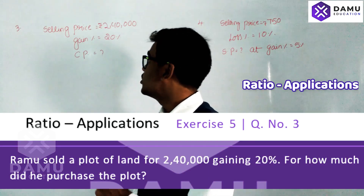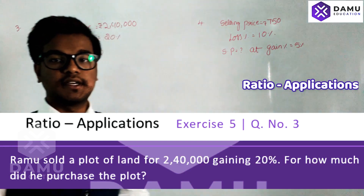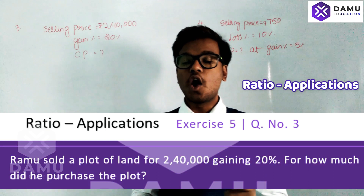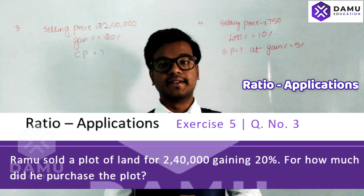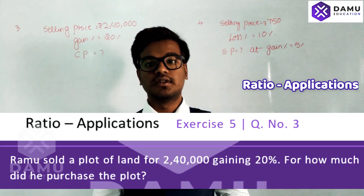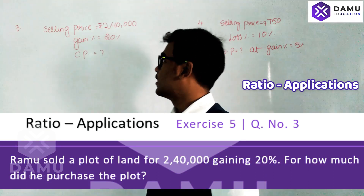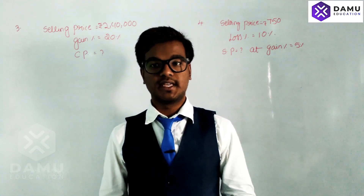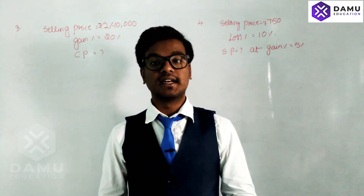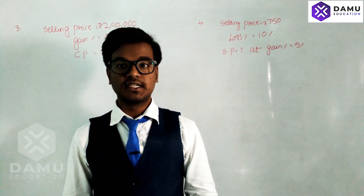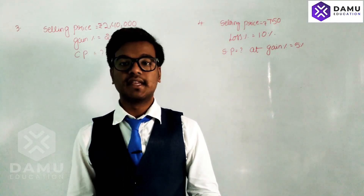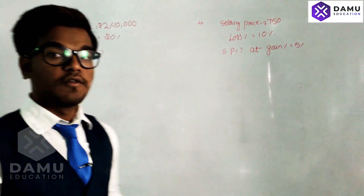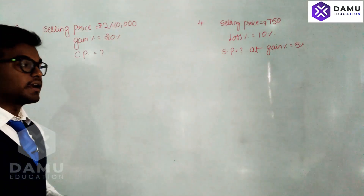He got a gain percentage of 20%. Then how much did the plot cost when he bought it? What is the cost price — how many rupees did he pay to get a 20% gain while selling at two lakh forty thousand rupees? First of all, write the formula.